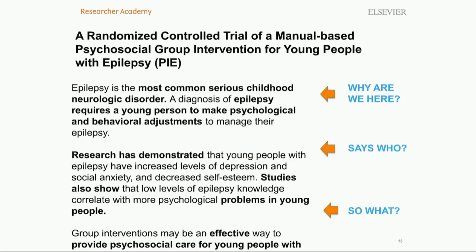Let's consider the questions a curious reader might ask, beginning with 'why are we here?' The opening in this example shares directly and upfront that epilepsy is the most common serious childhood neurologic disorder and that a diagnosis of epilepsy requires a young person to make adjustments. You next have an opportunity to address the 'says who' question, which provides a chance for you to build the reader's trust. Prior research and studies have been able to demonstrate that these problems do exist in young people with epilepsy.